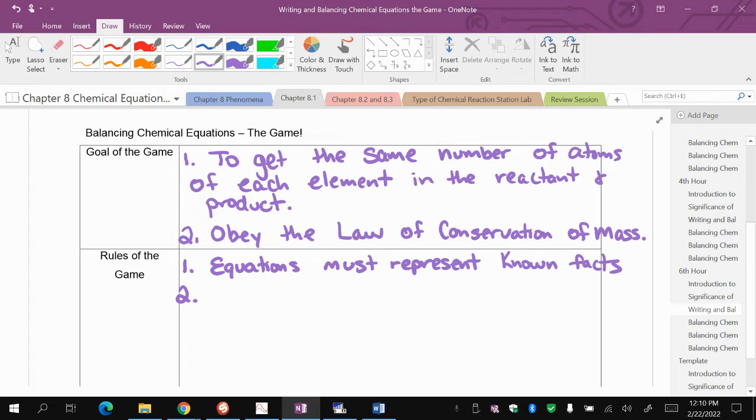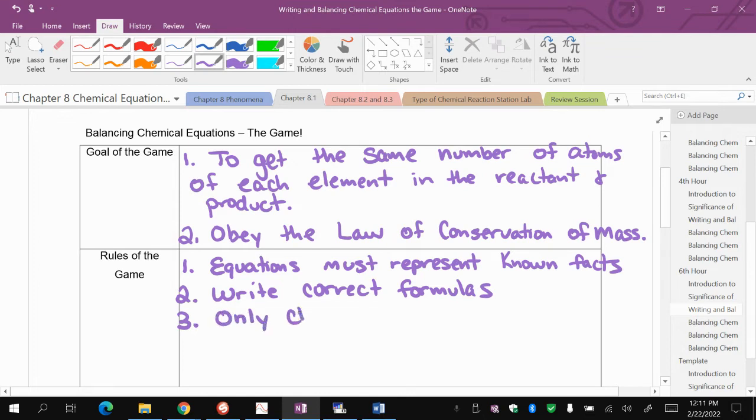Another rule of the game is that you must write correct formulas. If this is something that you struggle with, I would refer back to chapter 7.1, where we went over writing formulas. When you're balancing a chemical equation, you can only change or add coefficients. That's the number in front of the formula.